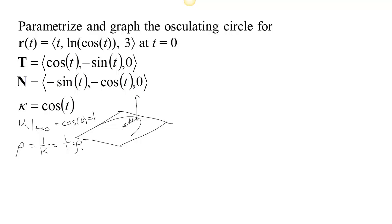And we have to go as far as the radius of curvature which is 1. So actually the center of our circle, if we have our location, our location r at time 0 is 0, the cosine of 0, 0, 3. So there's our location at time 0.